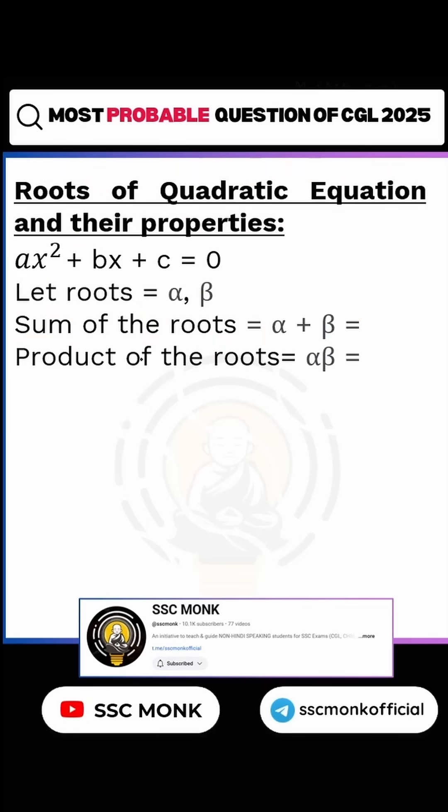You must have known about ax² + bx + c = 0. If roots are α and β, then sum of roots α + β is equal to -b/a, and product of roots αβ is equal to c/a. Yes or no? Yes.